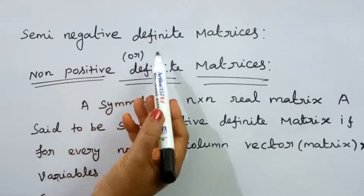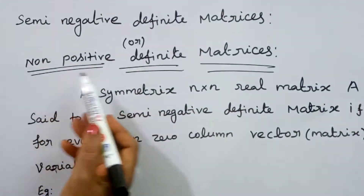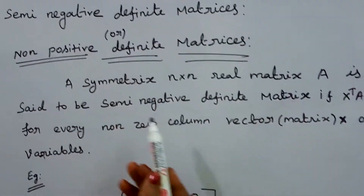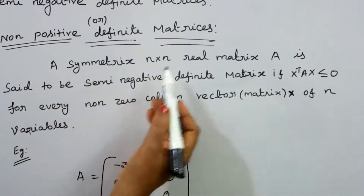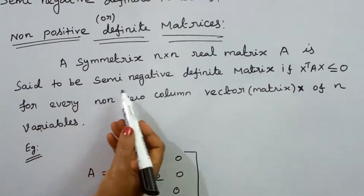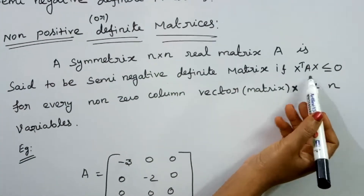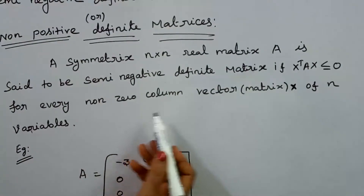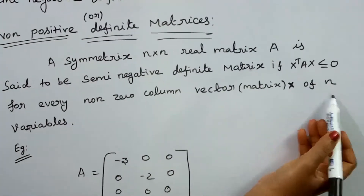Semi-negative definite matrices are also called non-positive definite matrices. By definition, a symmetric n by n real matrix A is said to be a semi-negative definite matrix if x transpose Ax is less than or equal to 0 for every non-zero column vector x of n variables.